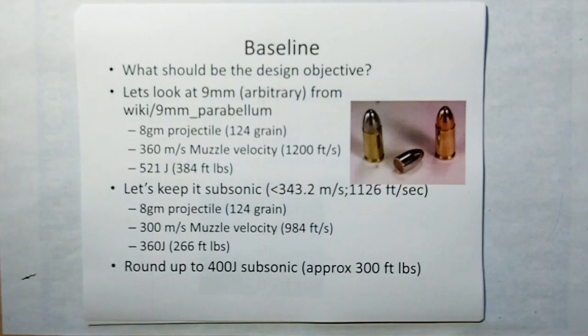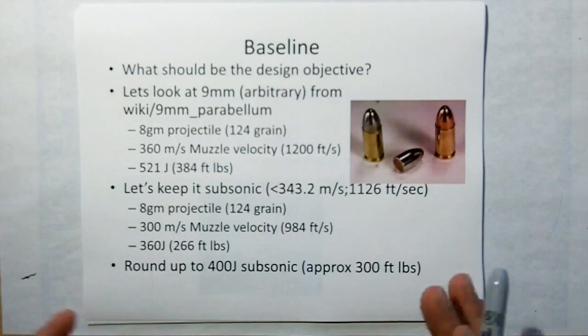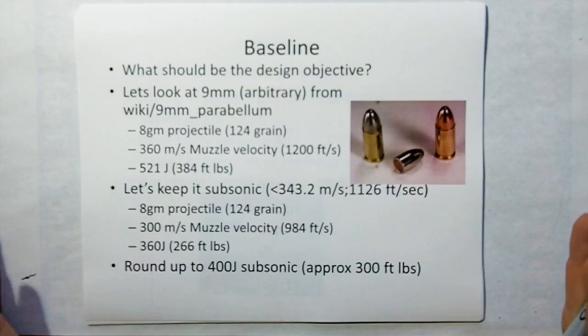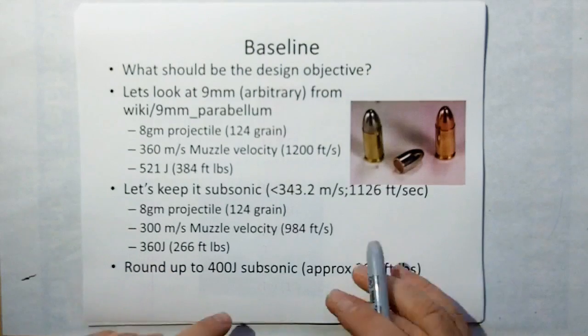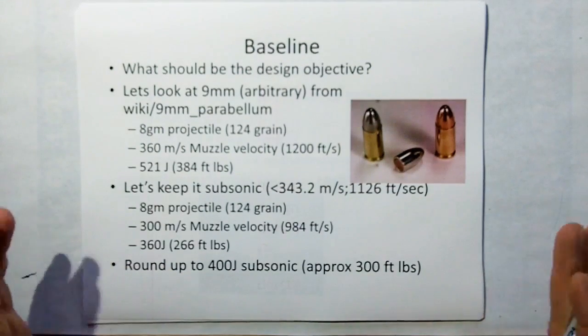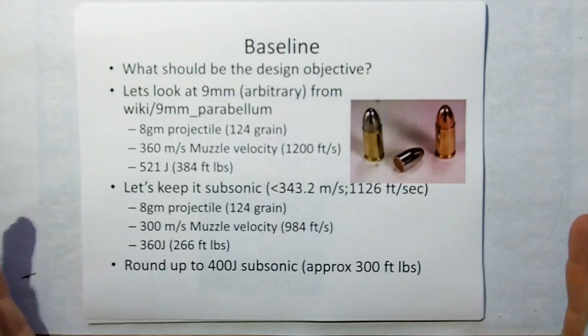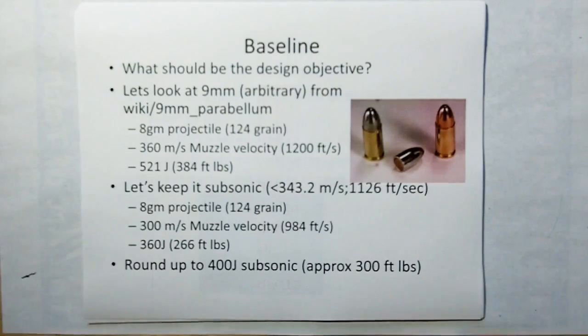Alright, but we don't want to go supersonic with this because that's a waste of energy. We want to make this very efficient. So we're going to keep it subsonic. Therefore, if we keep with an 8-gram projectile at 300 meters per second, that's going to work out to 360 joules or 266 foot-pounds. So let's round it up, make a nice even 400 joules, and we'll adjust the weight of the projectile to keep it subsonic. We're looking at about 400 joules or about 300 foot-pounds.